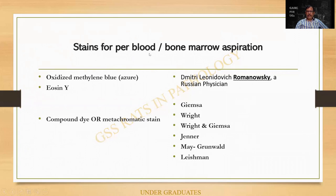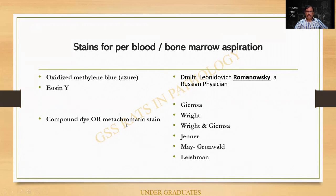What are the stains for peripheral blood and bone marrow aspiration? These are called Romanovski stains, after Romanovski, a Russian physician. They are called compound dyes because they contain two ingredients: eosin and methylene blue. That is why you get two different colors in a smear. They are called compound dyes and are metachromatic because one component stains for one structure and the other for another. Various Romanovski stains include Leishman — which we commonly use — Wright stain, Wright and Giemsa, Jenner, Giemsa, May-Grünwald. These are all modifications of the Romanovski stains.